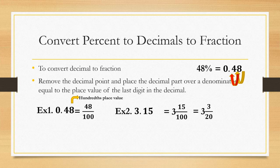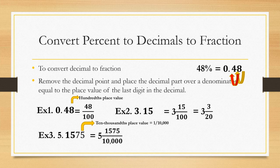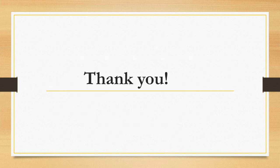For a third example, convert 5.1575 to a fraction. The last digit is in the ten-thousandths place, so we have 51575 over 10000. Dividing by 5 gives 10315/2000, and dividing by 5 again gives 2063/400, which is the simplest form. This is the final answer.